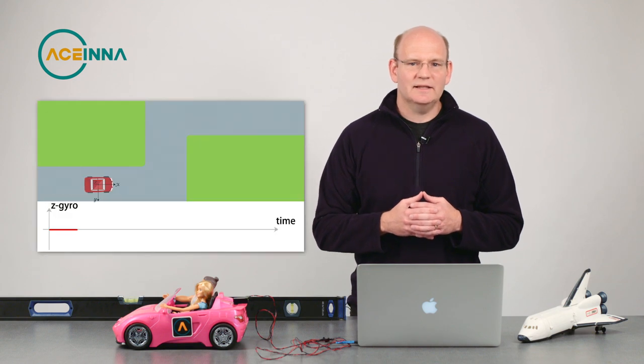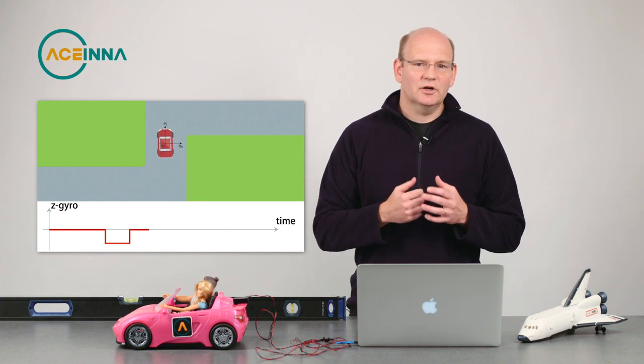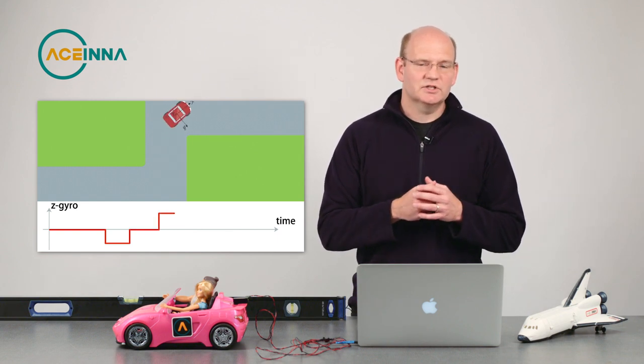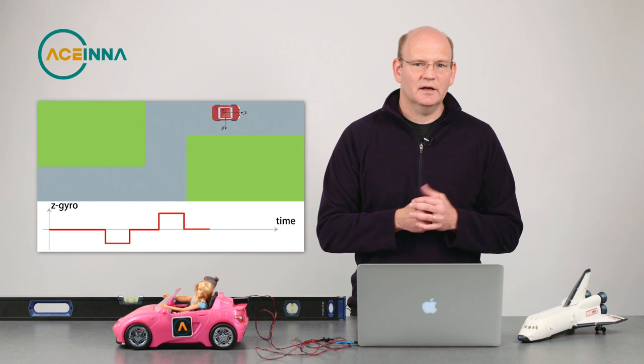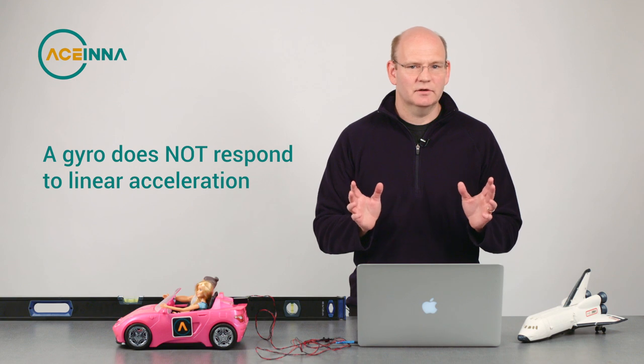And you can see that in the simulated gyro signal above, if I integrate that red curve, I get a 90 degree change to the left and then a second 90 degree turn to the right. The big bonus here is that a gyro does not respond to linear acceleration.